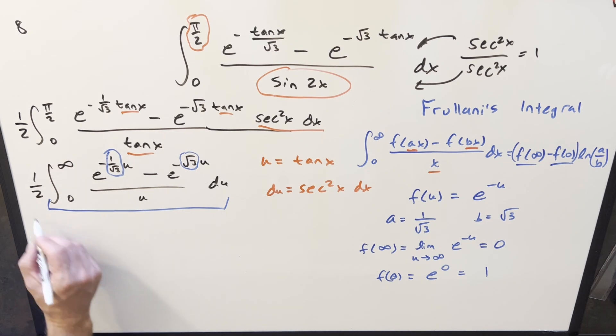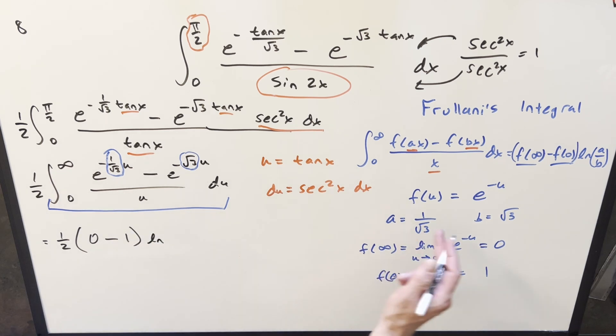But now, at this point, we've got everything we need to use our formula. So let's see if we can finish this off. I'll bring it down to 1 half in front. Then our f of infinity value, that's going to be a 0. f of 0 is 1. Then we have natural log of our a over b.